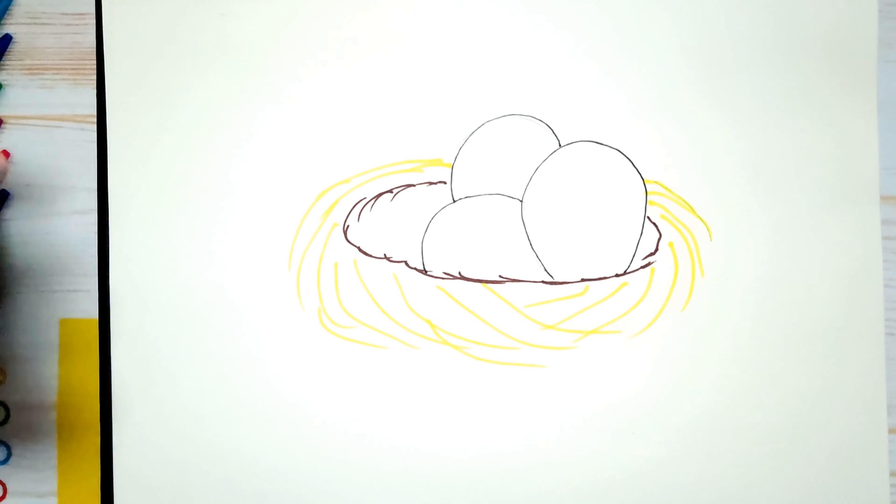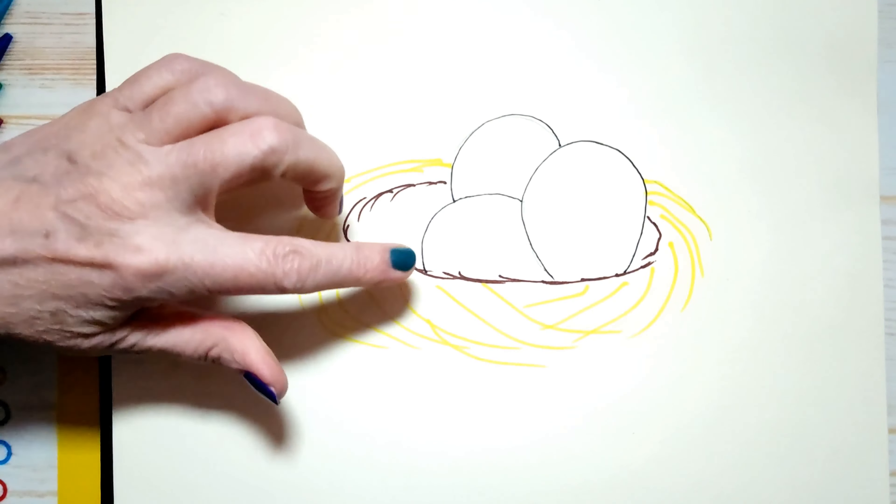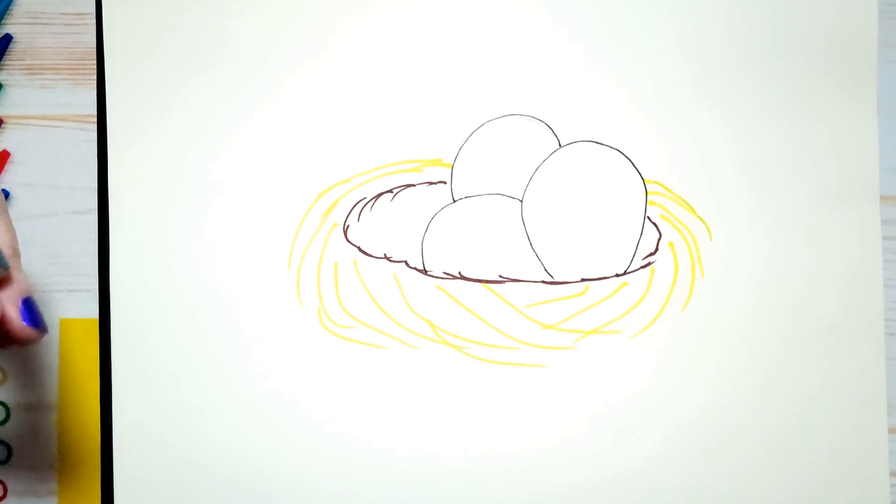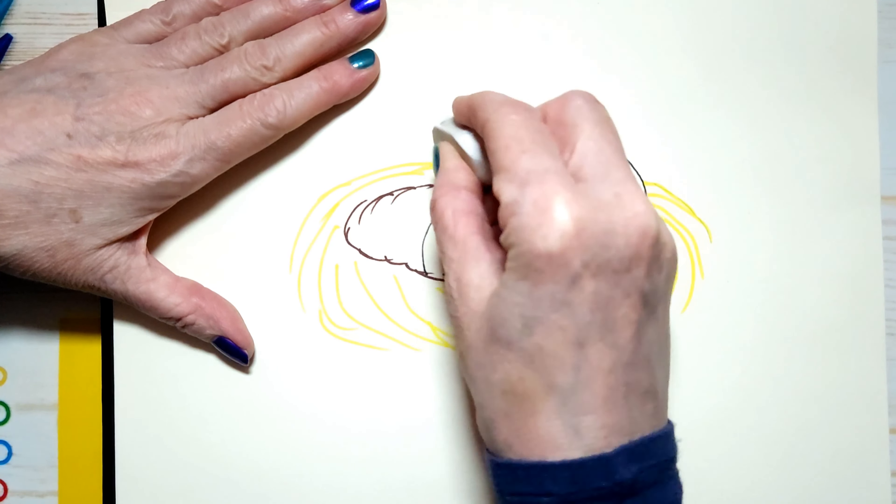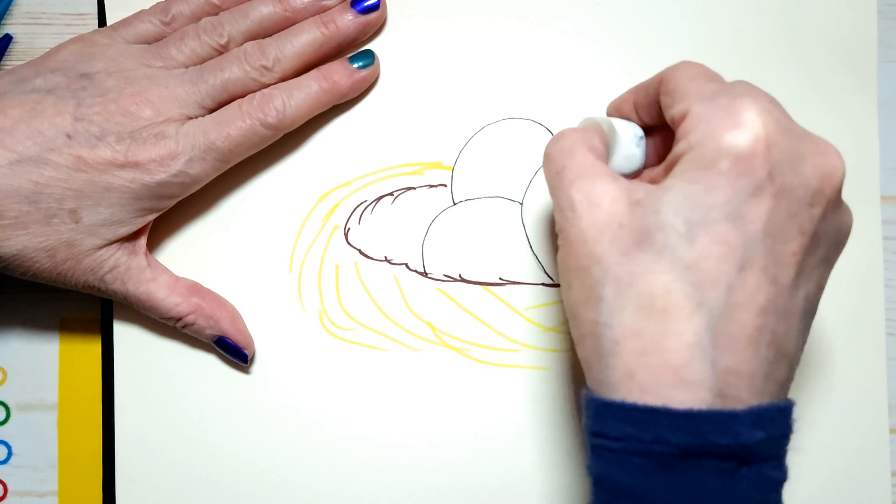And I'm going to erase. Now remember, make sure your marker is dry before you start erasing or else you're going to smudge everything everywhere. Sharpies dry very, very quickly.